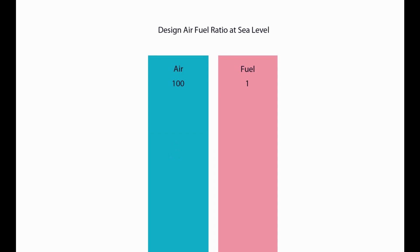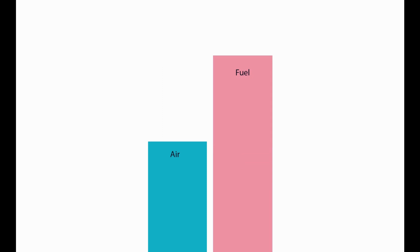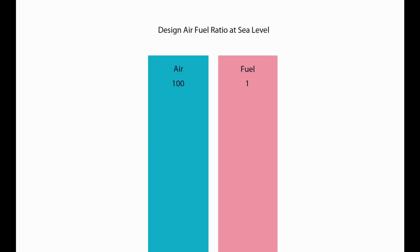Now assume we made all the necessary mixture adjustments on the way up to 7,000 feet, but on our descent we forgot to make corrections. Now we have too much air and not enough fuel. This will make the engine run hotter than normal, eventually burning the valves and really damaging the engine. In both cases — too much or too little fuel — you could find yourself in a really bad situation, so maintaining the proper air-fuel ratio is very important.